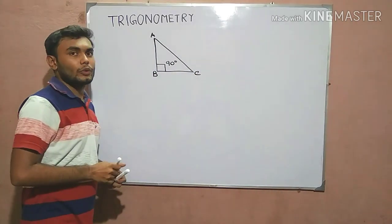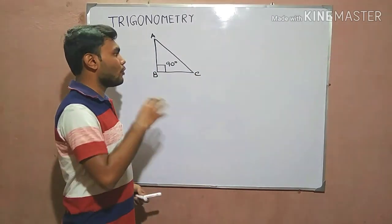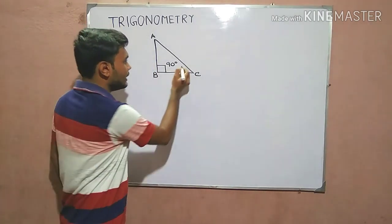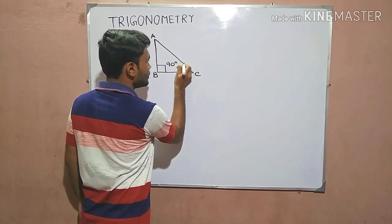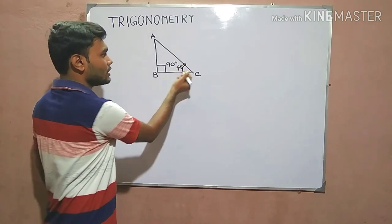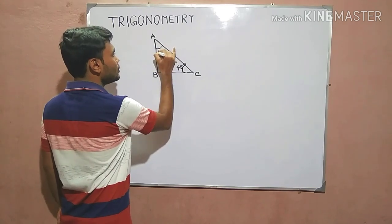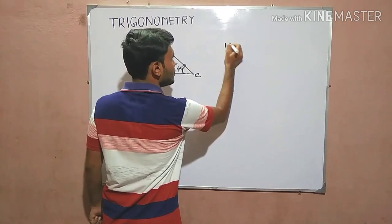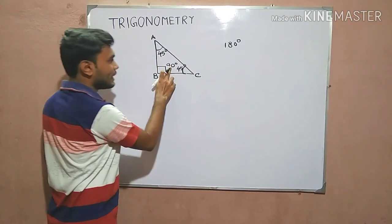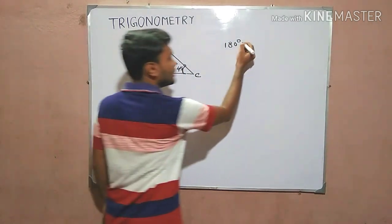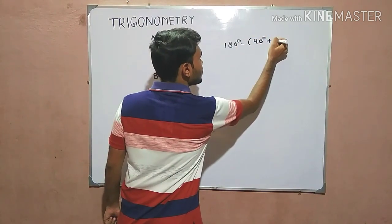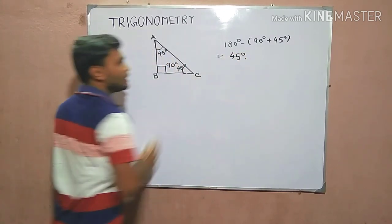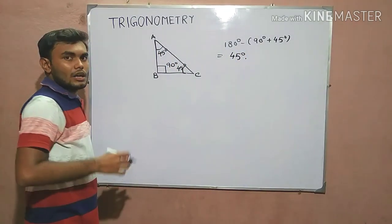We are going to find out the values of 45 degree, so obviously we need a 45 degree angle in this figure. Let us suppose this angle is 45 degree. If this angle is 45 degree, then obviously this angle would also be 45 degree, because the sum of the angles is 180, one angle is 90 and another is 45, so the other would be 45 degree.